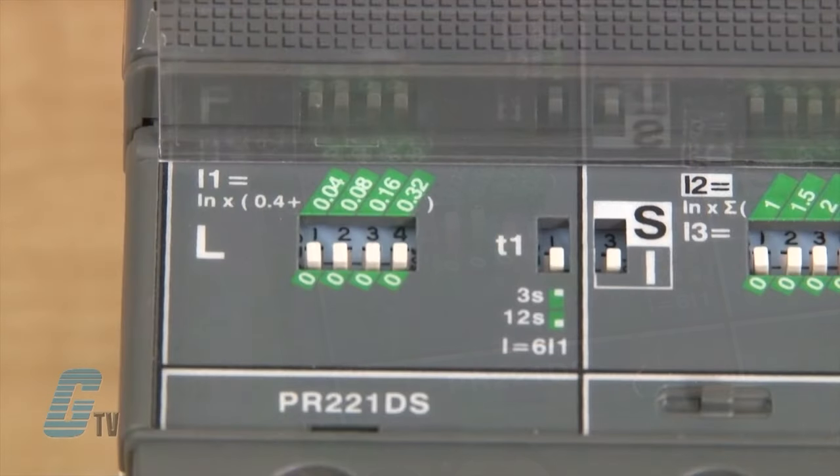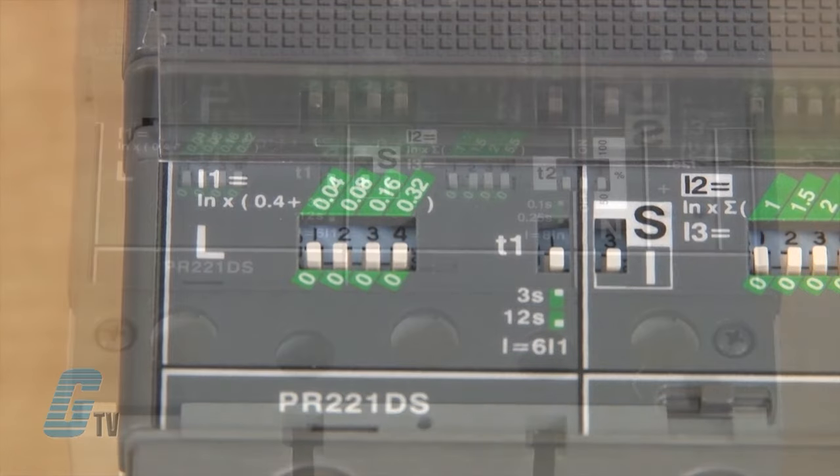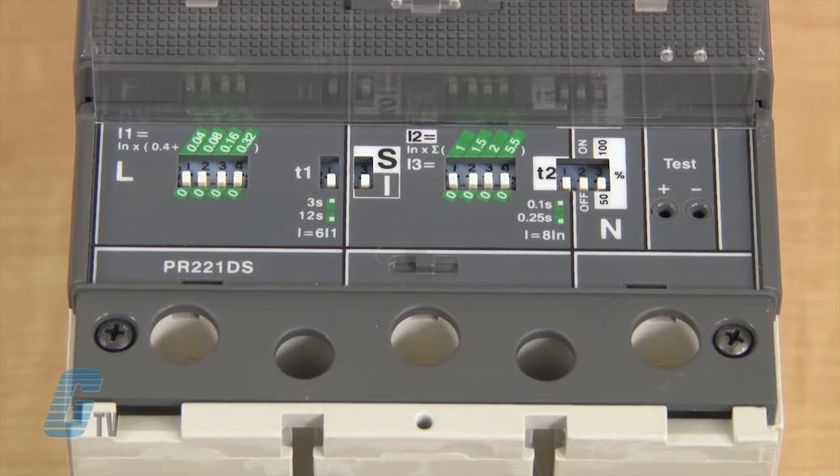I can also set the trip curve time delay with the T1 dip switch here. My next set of dip switches is for setting either a short time delay with S or an instantaneous time delay with I.